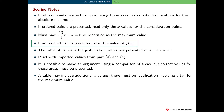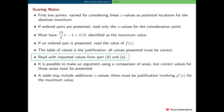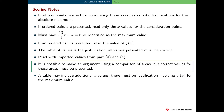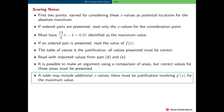If an ordered pair is presented as the absolute maximum value, we'll read the value of f of x. The table of values is the justification in this problem, and to earn the justification point, all values presented must be correct. We will read with the student who imports incorrect values from parts d or e, as long as they haven't changed the complexity of the problem — they're still eligible for all four points. It is possible to make an argument using a comparison of areas, but correct area values must be included. If a table includes extra x values, the student must include a reason for excluding them involving g prime of x.